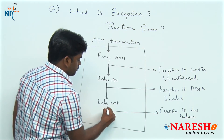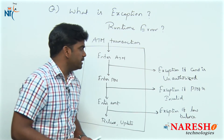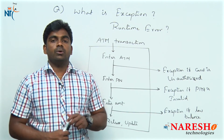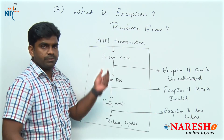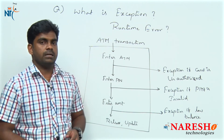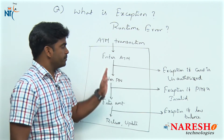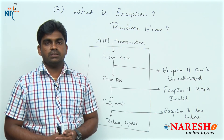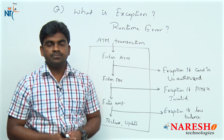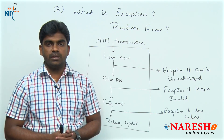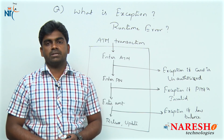If everything is perfect, it will release the amount and update the account. Simply, in a single transaction, when you are executing your application, there is a chance of getting any number of errors based on end user input — all those errors at runtime are called exceptions. Exceptions cannot be controlled at development time, but you can write logic — an instruction set — that executes at runtime if an exception is raised. This is simply what an exception and a runtime error are. Hope you understood. For more videos, please subscribe to the Naresh IT channel. Thank you.